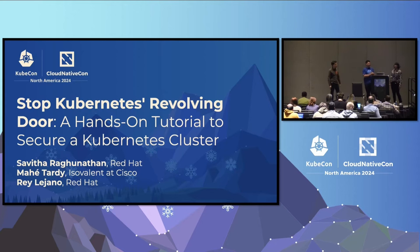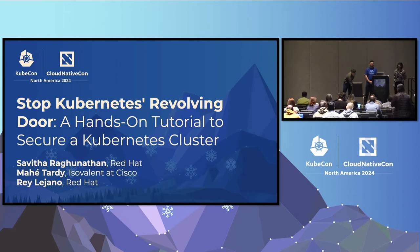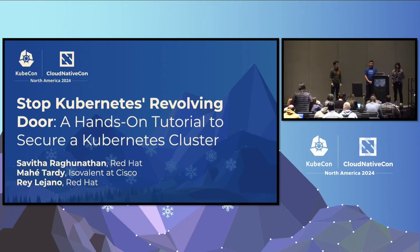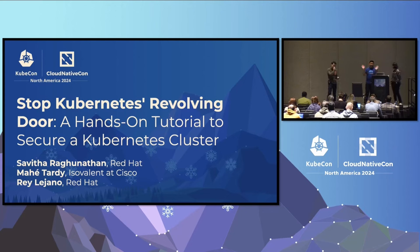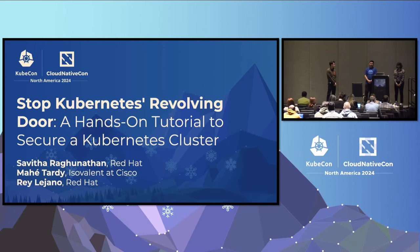Let me introduce Savita. My name is Savita Ragunathan. I am a senior software engineer at Red Hat. I also work with Mahe and Ray on the Kubernetes SIG Security Group and I am the lead for the SIG Security Documentation subproject. I'll pass it over to Ray. My name is Ray Lajano. I'm a solutions architect at Red Hat. I'm also one of the co-chairs of Kubernetes SIG Docs and one of the subproject leads for SIG Security. I help run the external security audits for the project.